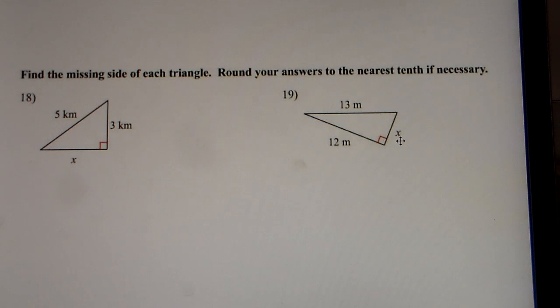The answer for number 19 is 5 because it's a 5-12-13 triangle. 5² plus 12² equals 13². 5 squared is 25, 12 squared is 144, and 13 squared is 169.